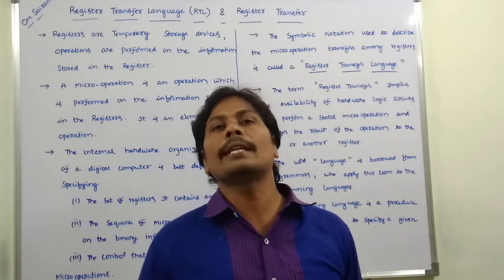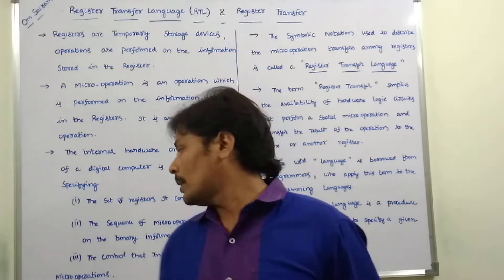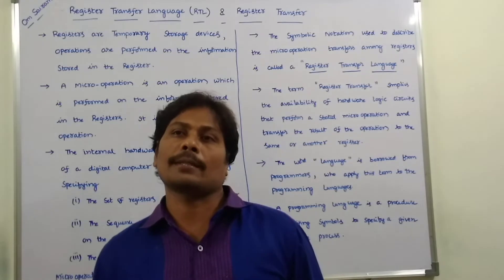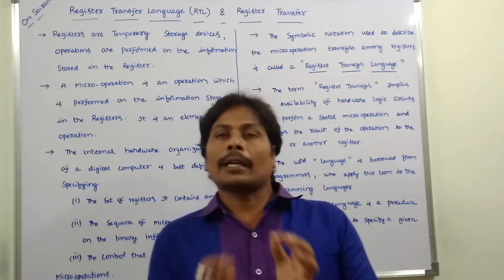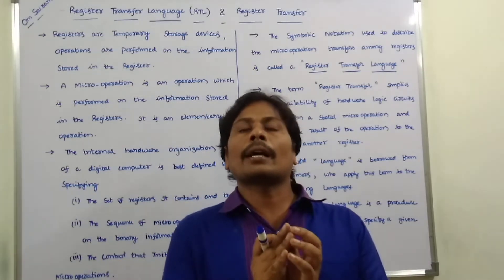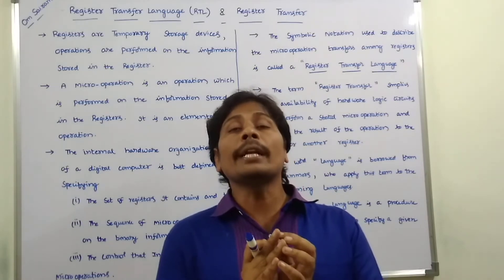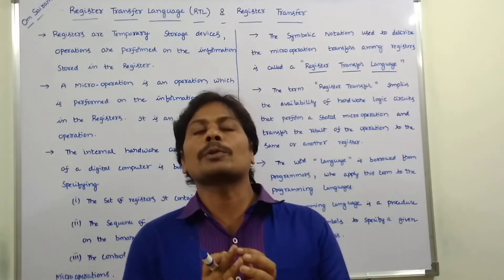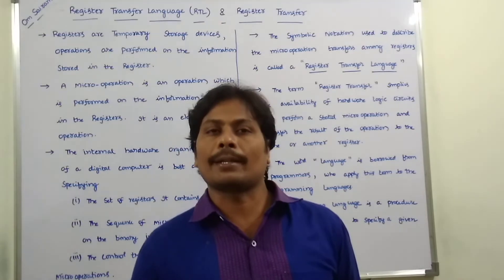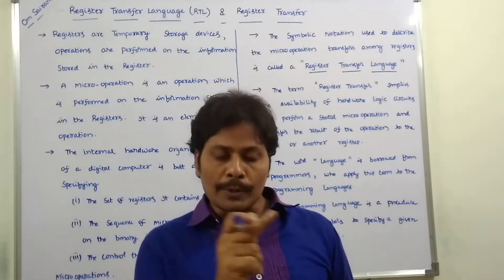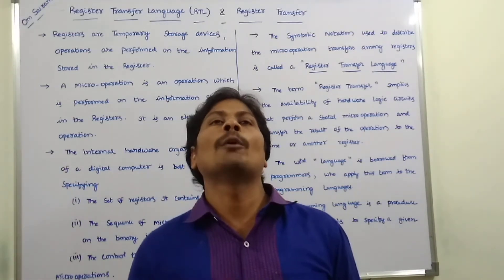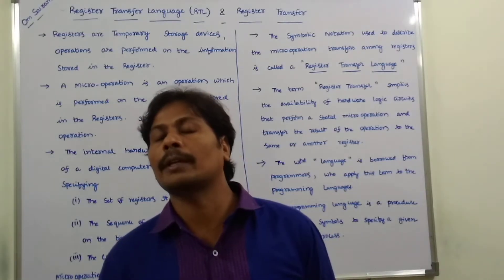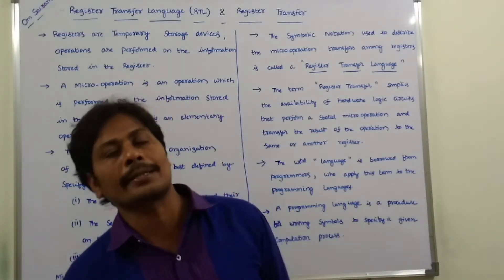Third, a control that initiates the sequence of micro operations. A control unit monitors the sequence of execution of micro operations. By using these three points, we can say that the hardware organization of a digital computer is best.